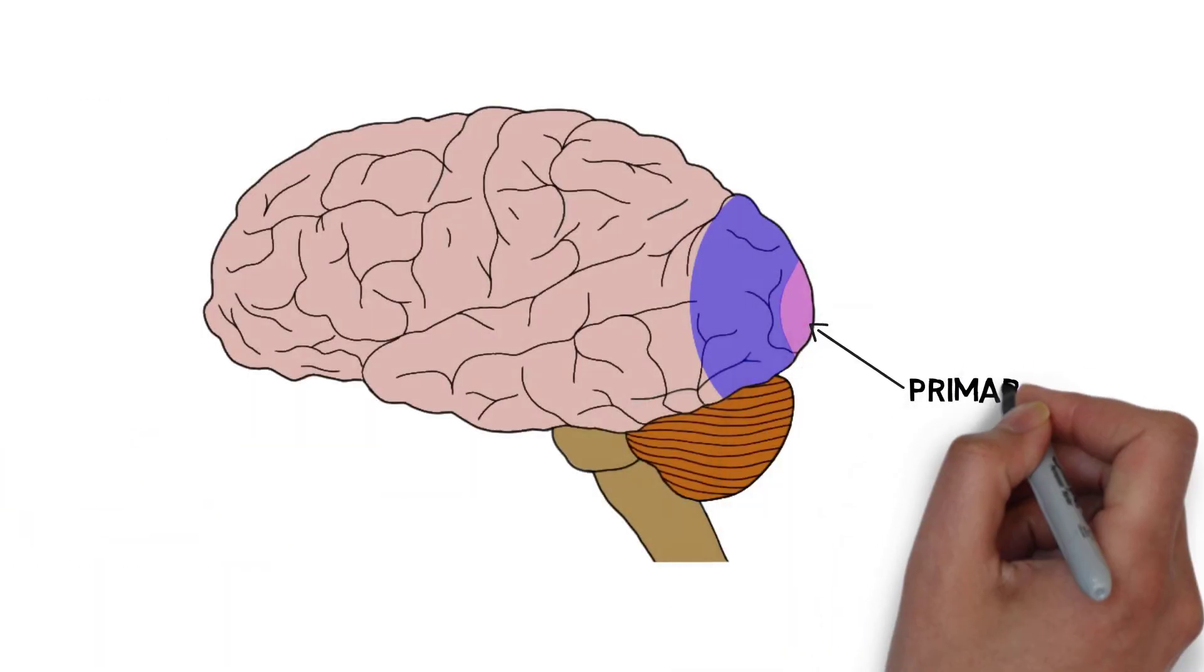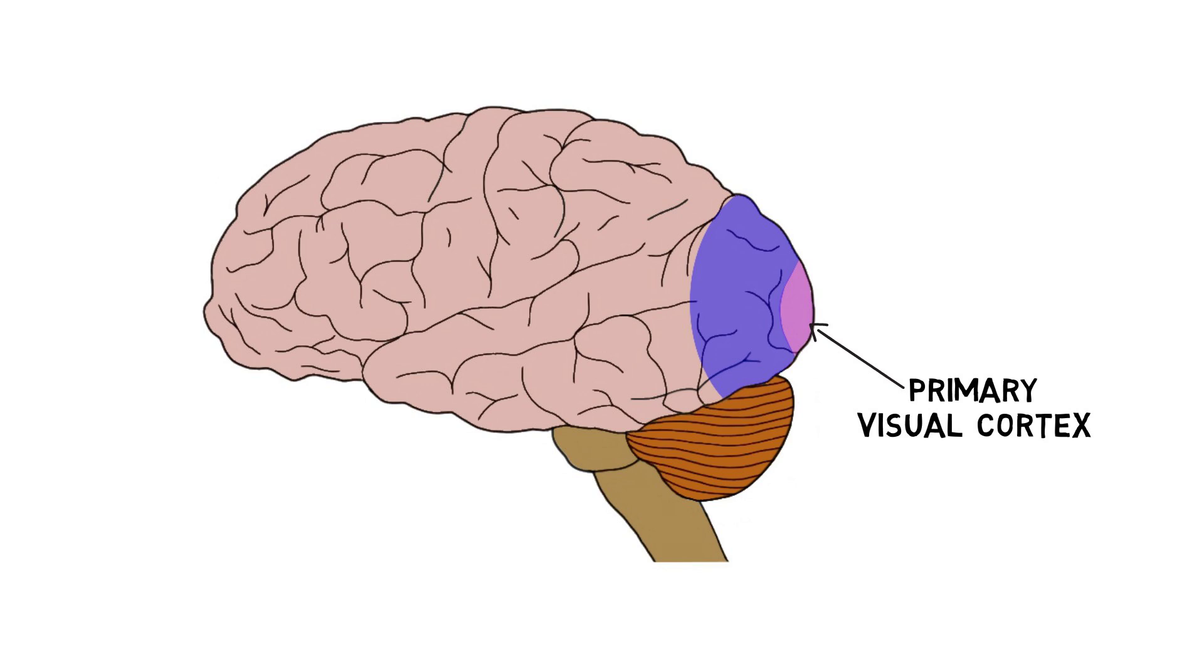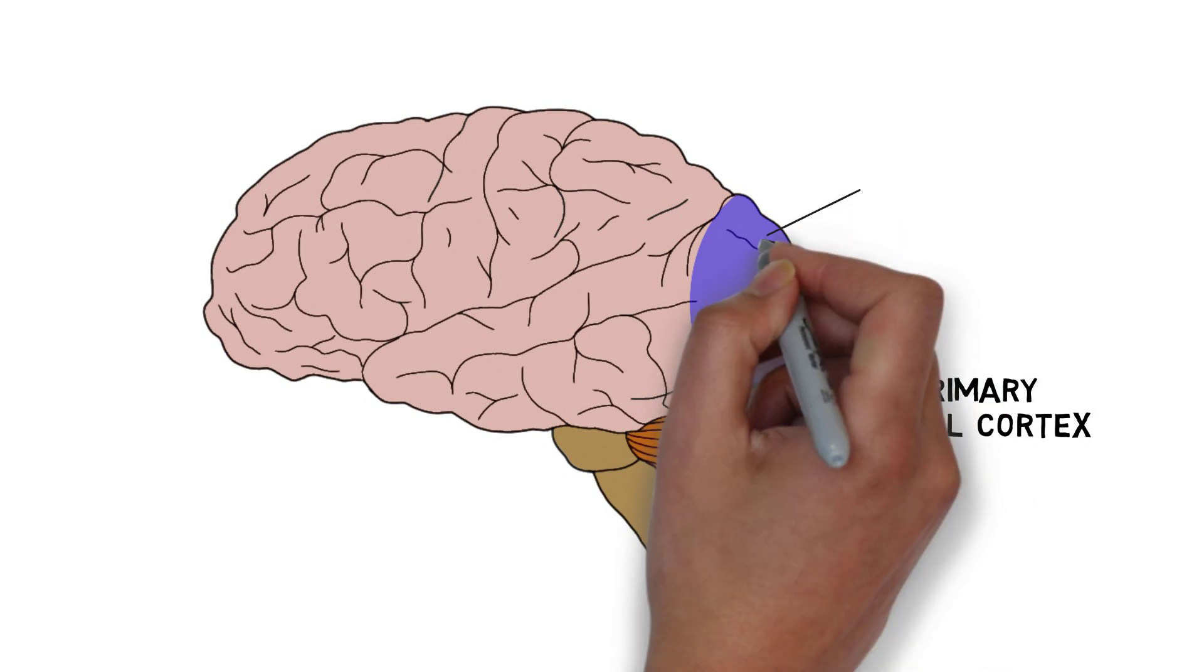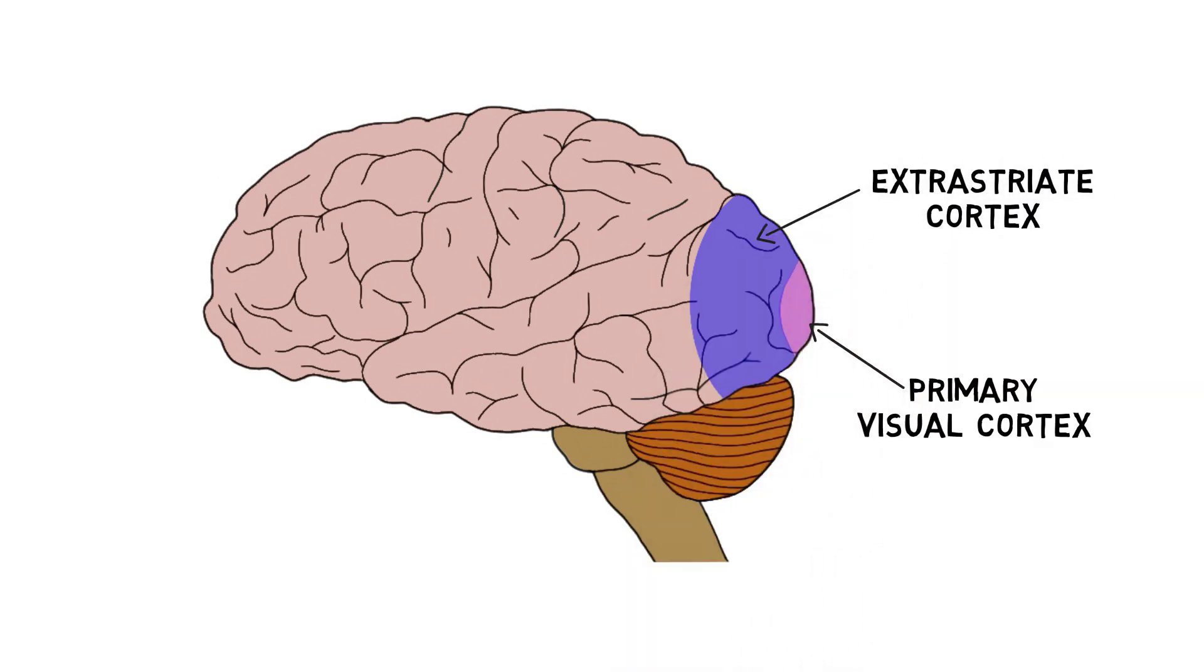Through activation of these specialized neurons, the primary visual cortex helps to identify basic features of a visual stimulus. But it also communicates with surrounding visual areas, which are sometimes collectively referred to as the extrastriate cortex, to process additional aspects of the visual scene.